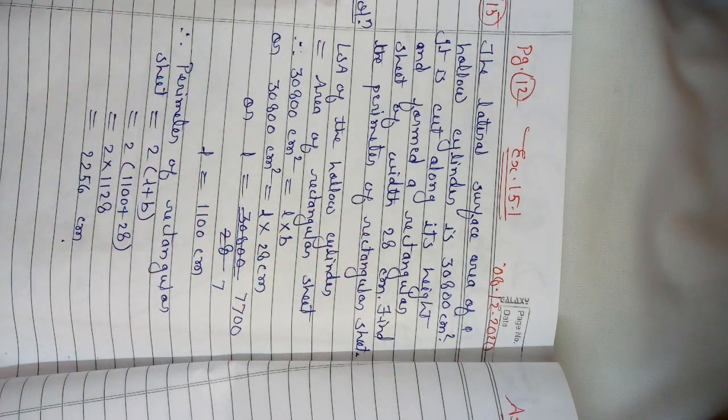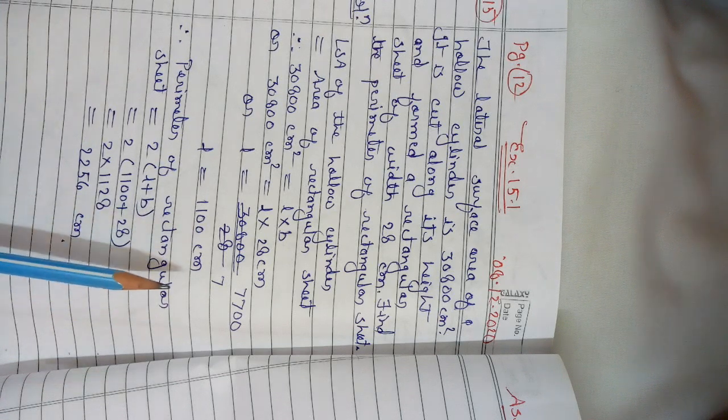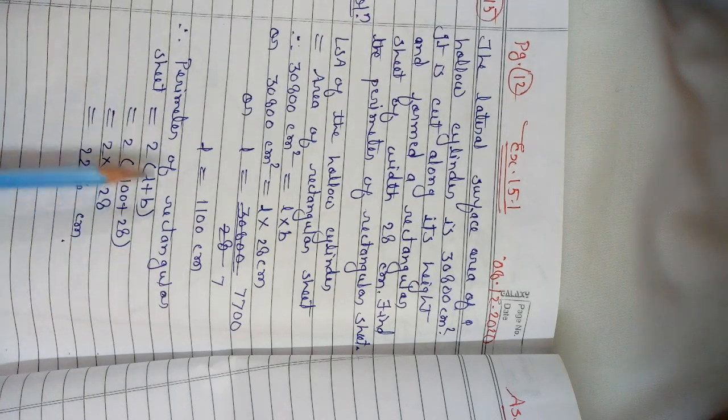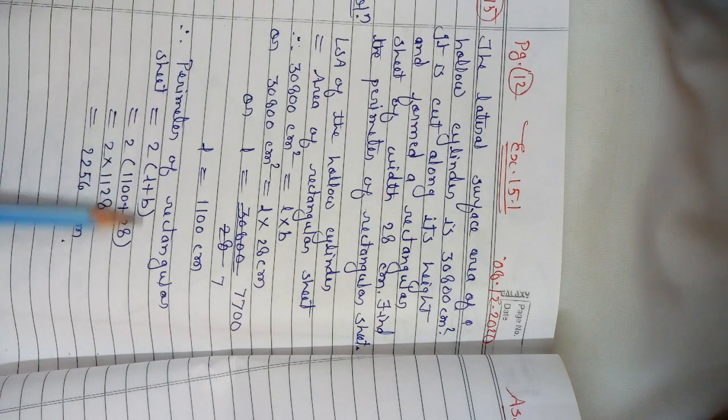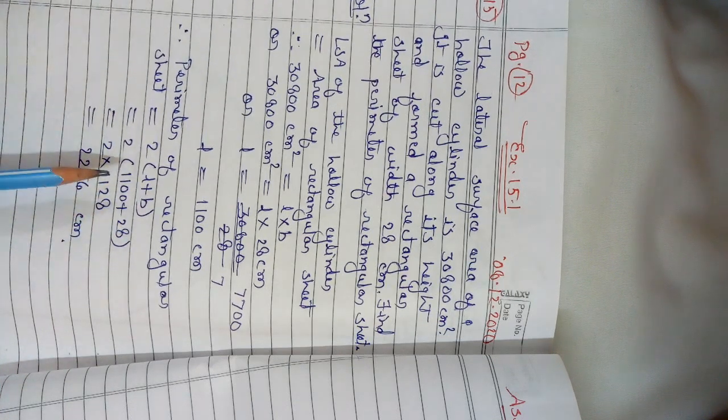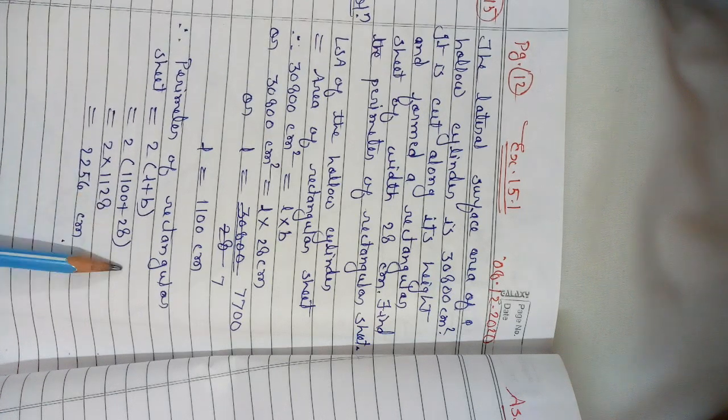Therefore, perimeter of rectangular sheet = 2(L + B). By substituting the values we get 2(1100 + 28) which gives us 2256 cm.